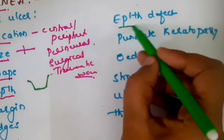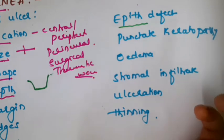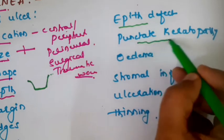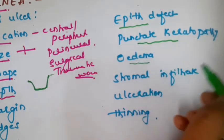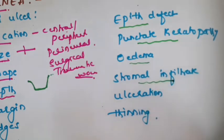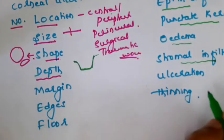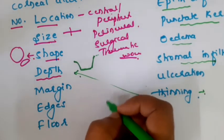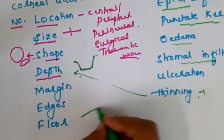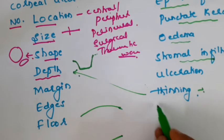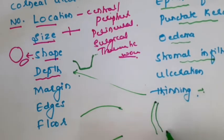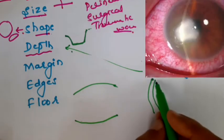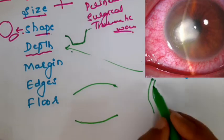After describing the corneal ulcer, go to the epithelial defect - not all corneal ulcers are associated with an epithelial defect. If there is one, make a mention of it. Look for punctate keratopathy, edema of the surrounding corneal tissue, stromal infiltration, and thinning of the cornea. The corneal ulcer should be examined under diffuse light followed by slit examination, with slits taken exactly at the cornea. If there are multiple corneal ulcers, make a separate slit at each one.